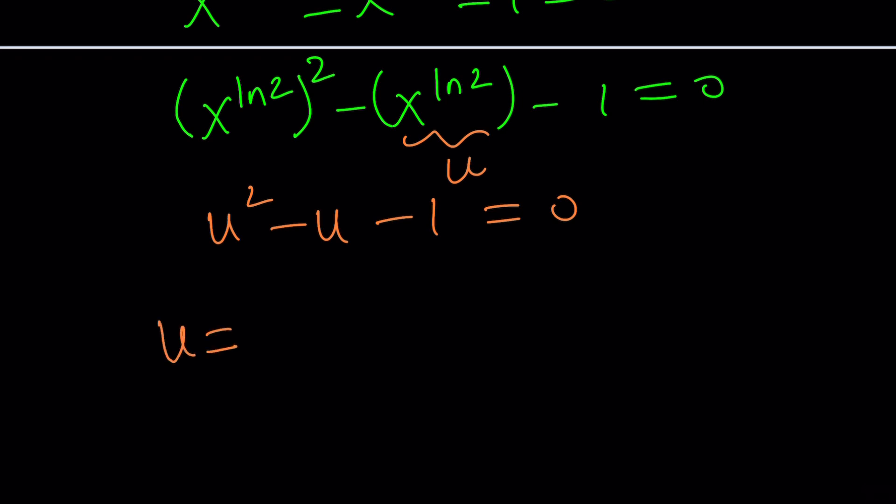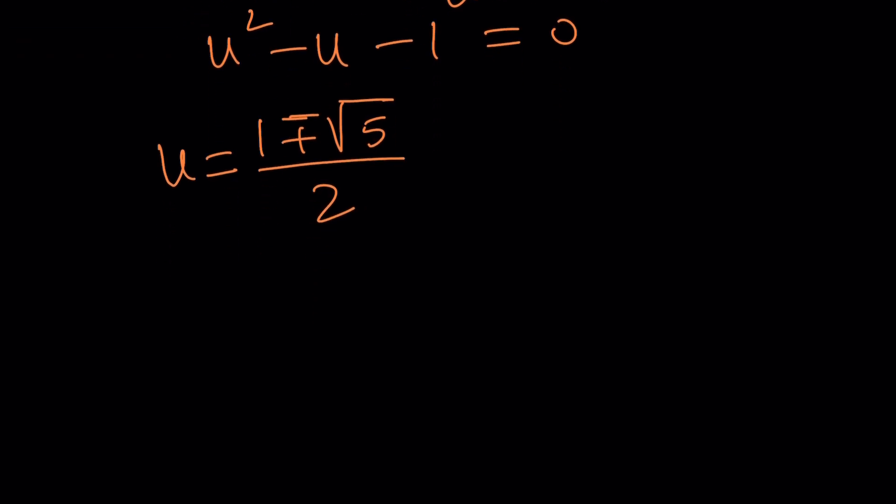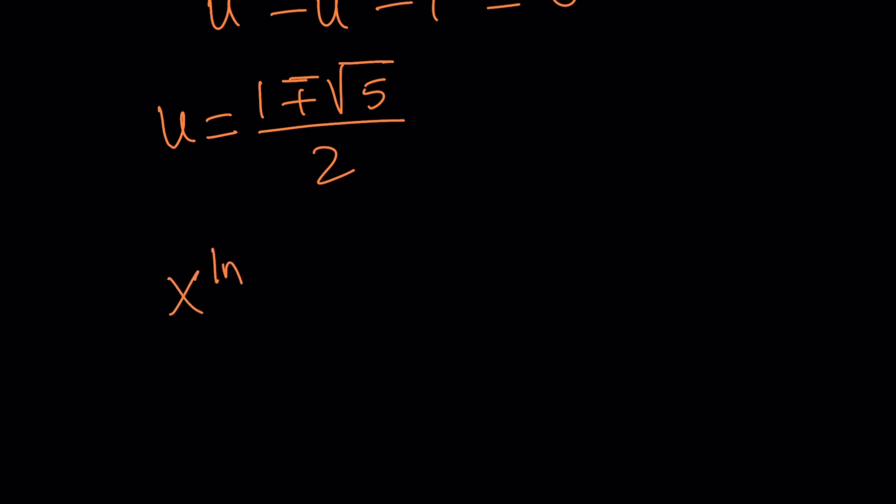u equals negative b plus minus the square root b squared minus 4ac. You probably know that's a 5. And here comes the golden ratio. It's everywhere. It's in nature. It's in videos, on YouTube, everywhere. So what does that mean? That is u and u is x to the power ln2. So x to the power ln2 is equal to 1 plus minus root 5 over 2.